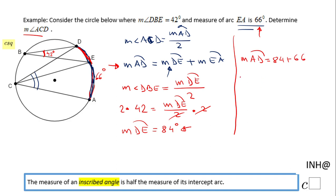So the measure of arc AD will be 150 degrees. Now we can go back to the starting point: the measure of angle ACD will be half of this 150, which is the measure of arc AD. So we finished the problem and the measure of angle ACD is 75 degrees.